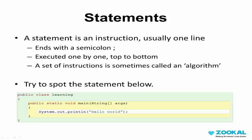A statement is just an instruction to the computer. It's usually one line and ends with a semicolon. A set of instructions is sometimes called an algorithm. Later on in this course, we'll go over some basic algorithms. Try to spot this statement in our code.